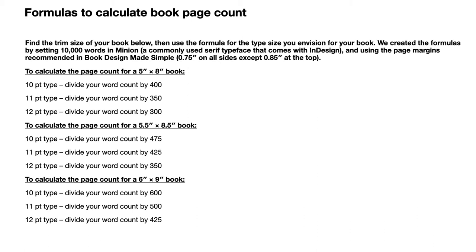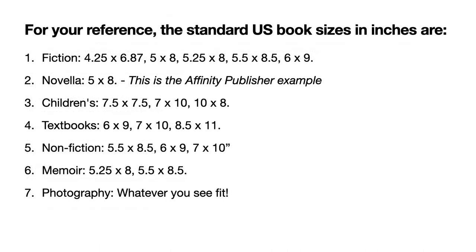It helps to know the book page count because you need to work out your spine width. Even a softcover book has a spine. It depends on the type size of your font — if you've got a really big font you'll only get a few words on a page; a small font gives you more words. The standard is 11 point type, and you can see quite a range of sizes depending on book size. Our 5x8 at 11 point type gives 350 words per page.